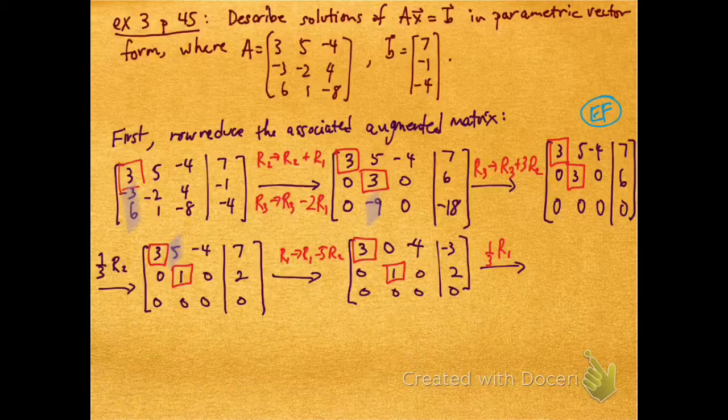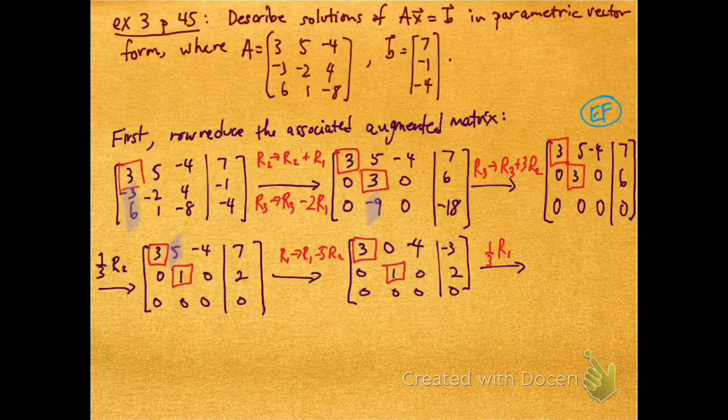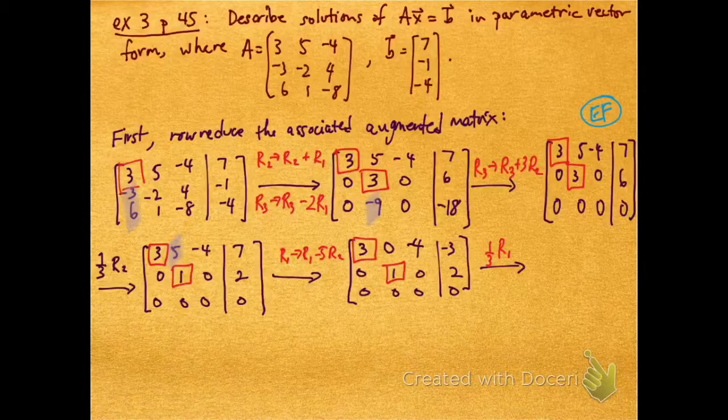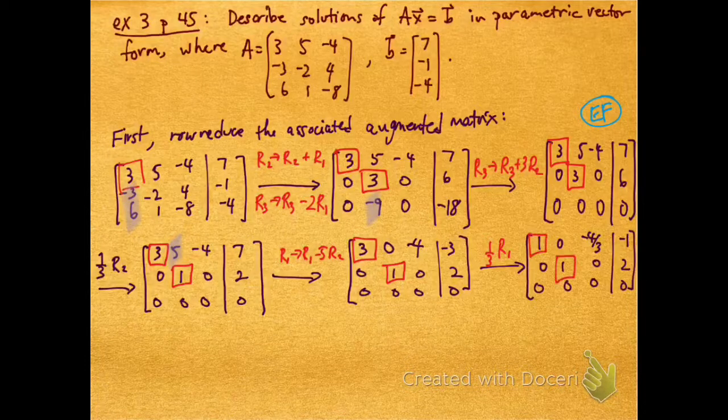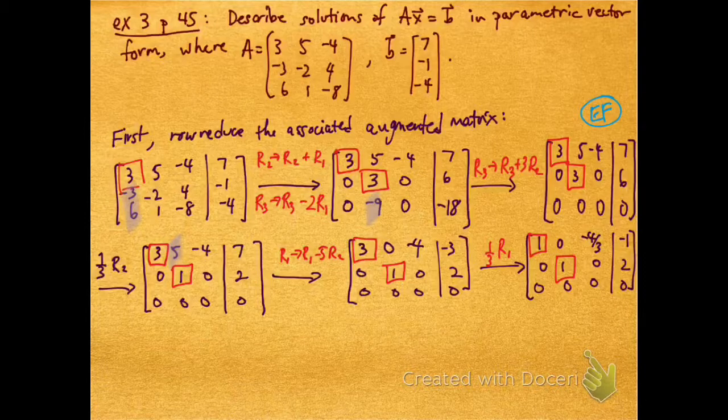And now I'm going to turn to the next pivot, which is a 3. I can turn it into a 1 by dividing row 1 by 3, and I get 1, 0, -4/3, -1 in the first row, and the second two rows stay the same.